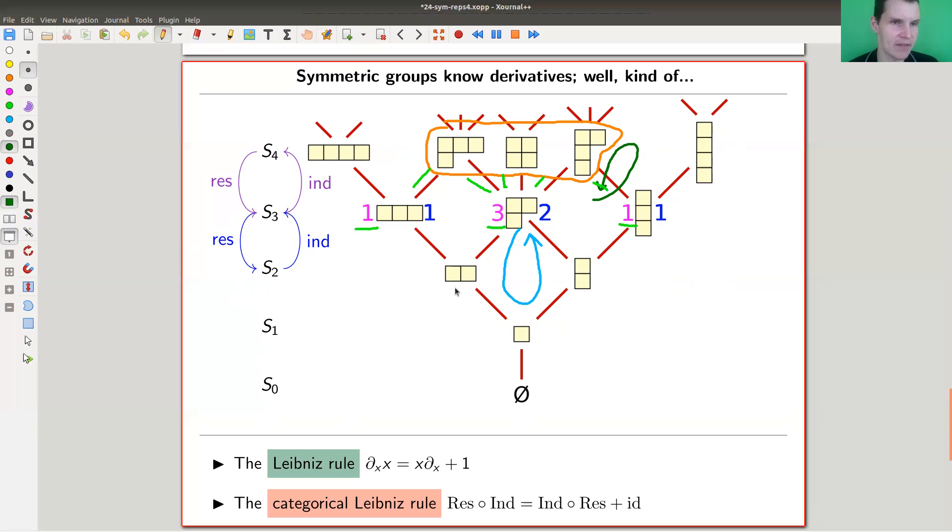I could do the same in the other direction. I could first restrict, and I get those two, and then I could induce, and I get one, two, three, four. So I get one, this one appears twice, and this one appears once. Note that it's almost the same—you're just one short here in the middle. Indeed, this is a relation we can check in general on the Young lattice.